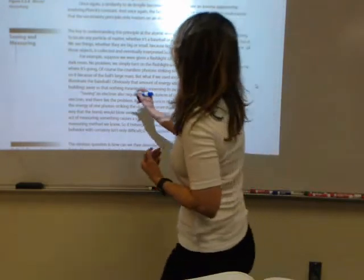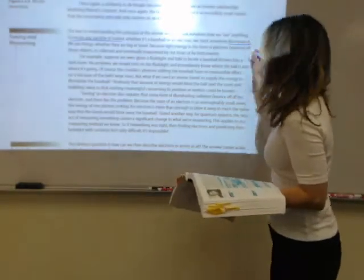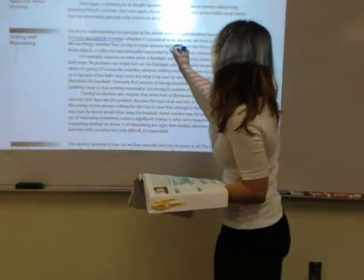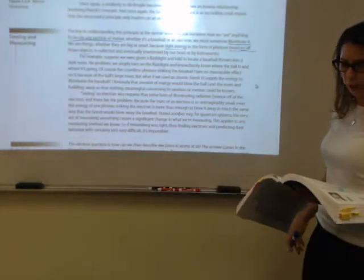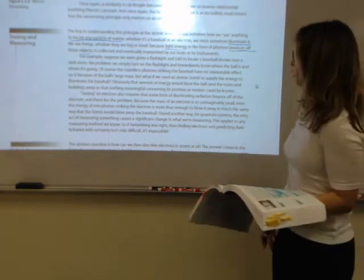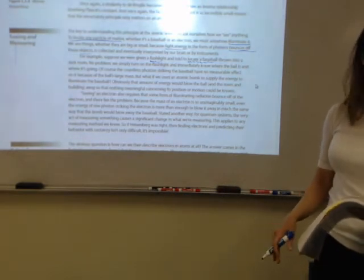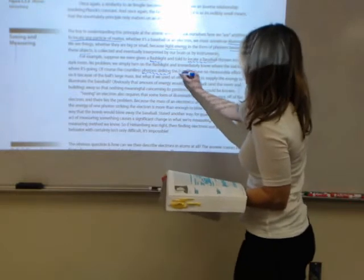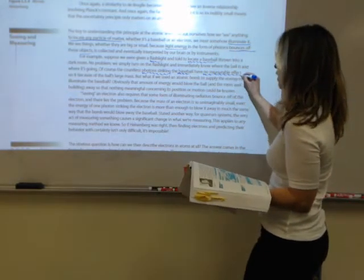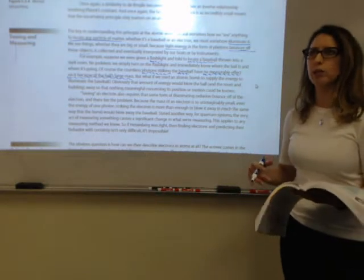Now, to locate any particle of matter, you have to illuminate it. Light energy is going to bounce off of the objects that you're illuminating, and they're going to be interpreted by our brain or whatever instrument it is that we're looking through. A flashlight could locate a baseball. If I throw that baseball into a dark room, when I turn on the flashlight, I immediately know where the ball is and where it's going. When those photons of light energy strike the baseball, there is no measurable effect on that baseball because the baseball has a really large mass. So the light energy is not going to influence where that baseball is going.